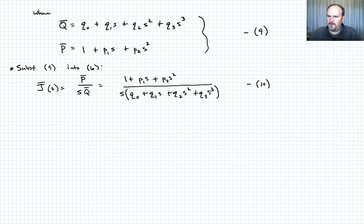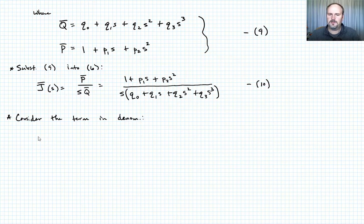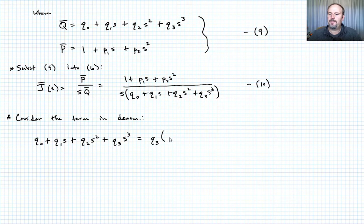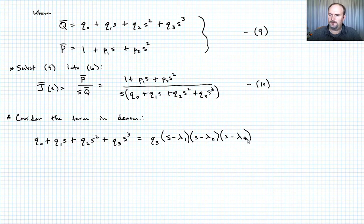We're going to consider the term in the denominator in parentheses: Q naught plus Q1 S plus Q2 S squared plus Q3 S cubed. We can write that as a factored polynomial — pulling out Q3, we get Q3 times the quantity S minus lambda one, times S minus lambda two, times S minus lambda three. Call that equation eleven, where the lambda i terms are the appropriate polynomial roots.